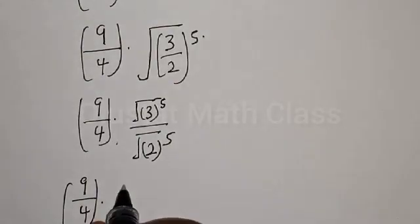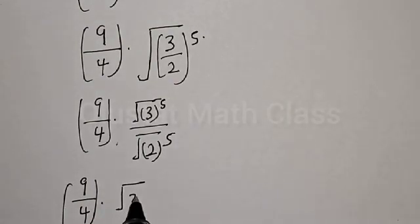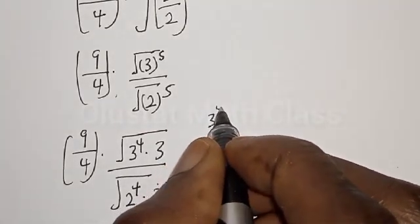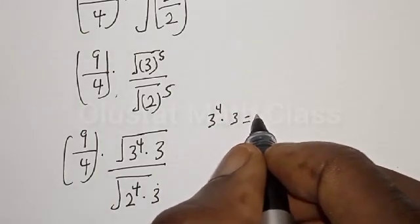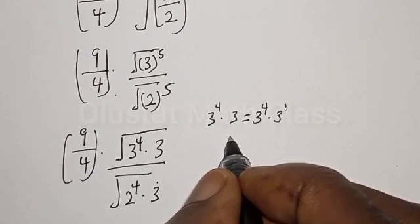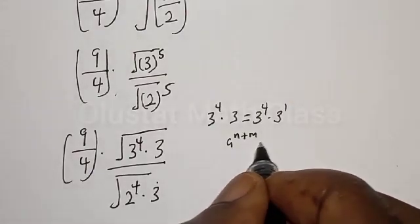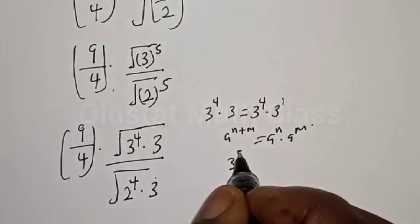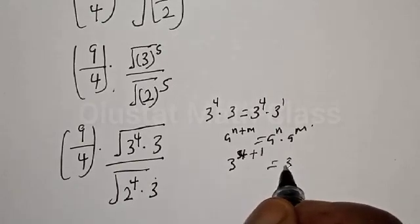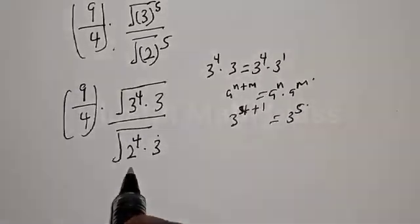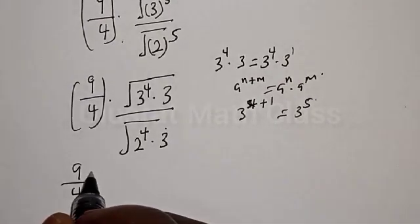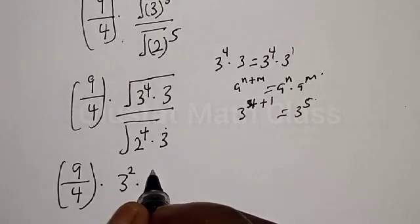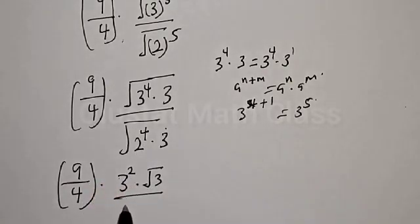The square root of 3 raised to the power 5 can be written as the square root of 3 raised to the power 4, multiplied by 3. Using the rule l raised to the power n plus m equals l raised to the power n multiplied by l raised to the power m, we get 3 raised to the power 4 plus 1, which is 3 raised to the power 5. The square root of 3 raised to the power 4 is the same as 3 squared. Similarly, the square root of 2 raised to the power 4 is 2 squared.